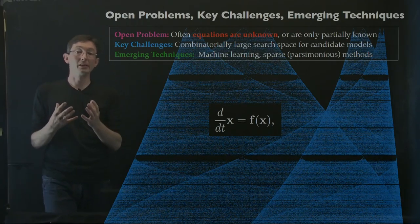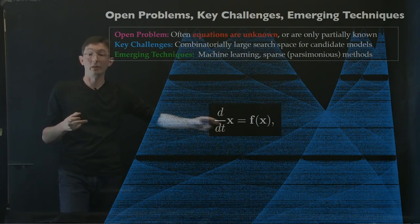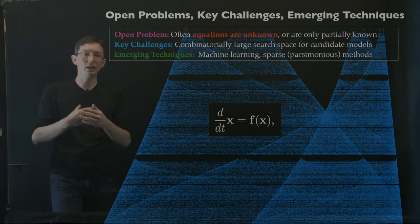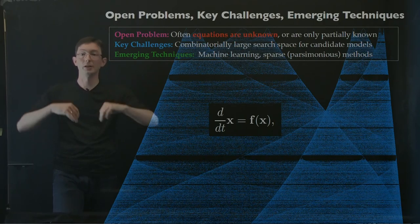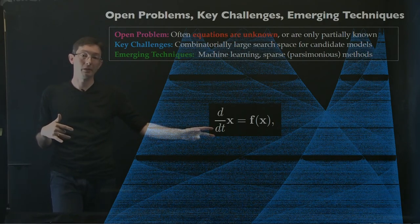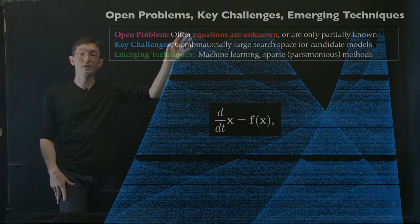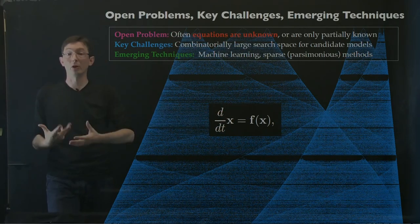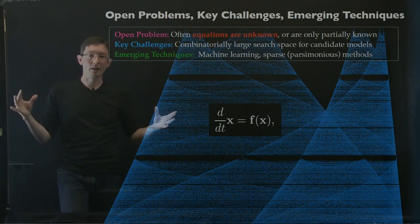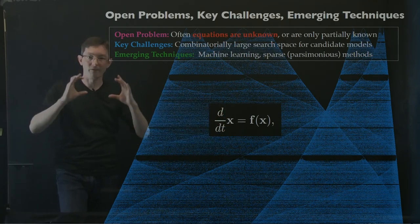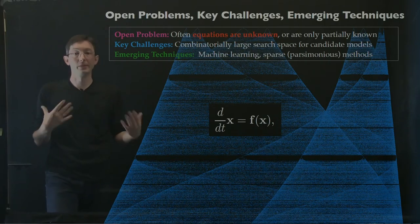One of the biggest problems is that when we do dynamical systems, we usually start with a dynamical system — x dot equals f of x. Maybe I'm analyzing a physical system like a pendulum on a cart, so I write down a Lagrangian and the Euler-Lagrange equations. But increasingly, for systems of interest, we don't actually have access to these equations or they might be partially unknown. There's no equation for your brain, the climate, or a disease spreading across the country. So discovering equations from data is very important — something Koopman can help with.